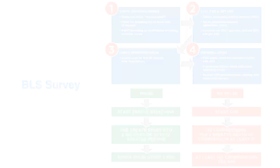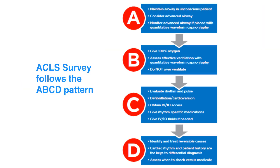The ACLS survey follows the ABCD pattern in which you check for airway, breathing, circulation, and differential diagnosis. Refer to Figure 21 in your corresponding ACLS manual to further learn about the ACLS survey.